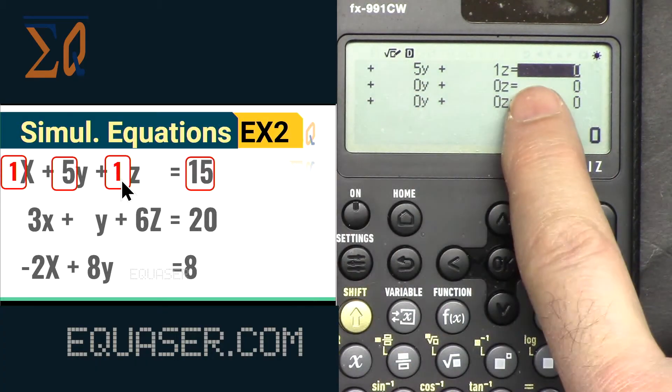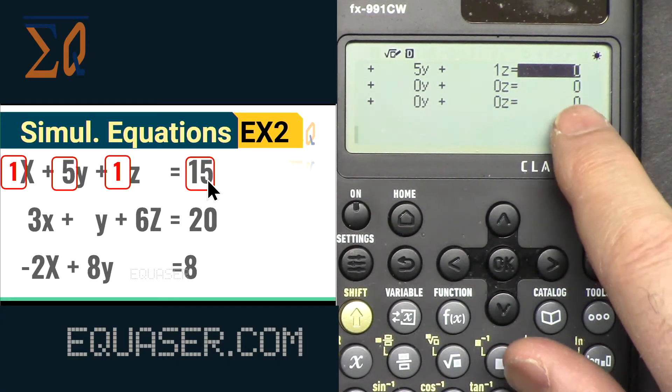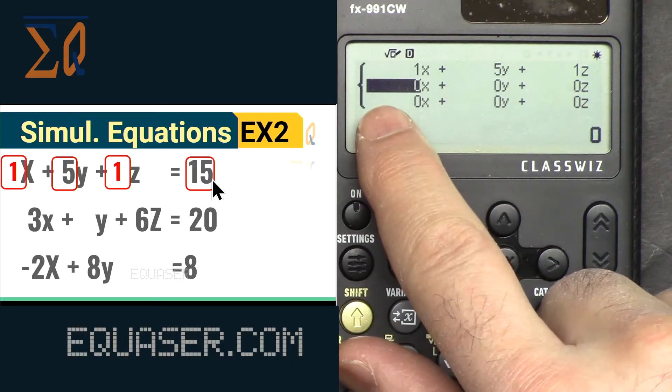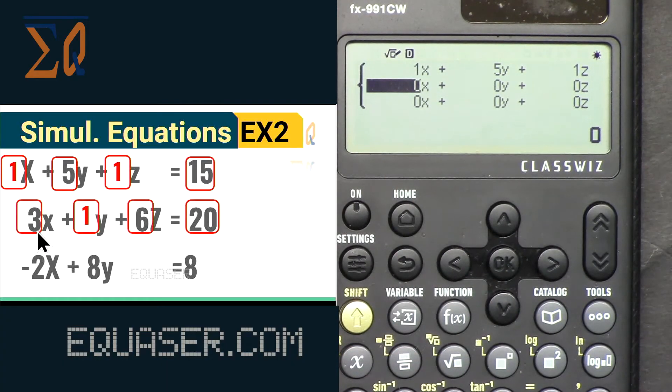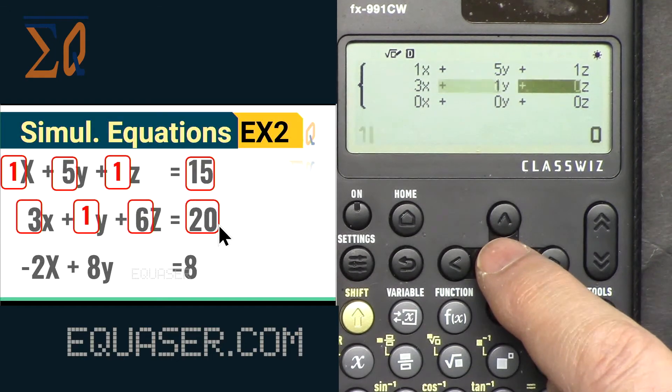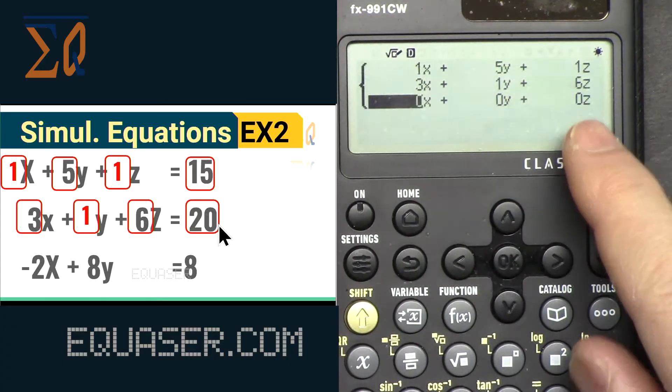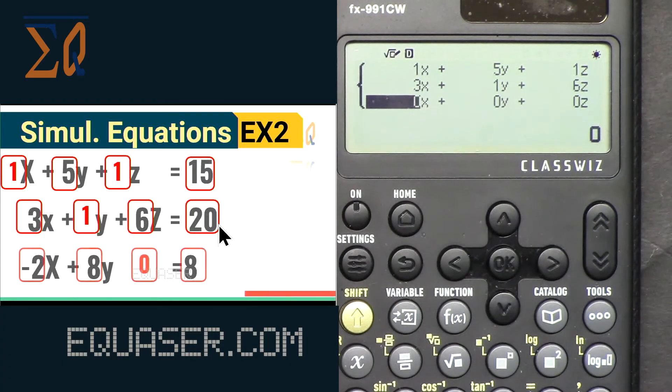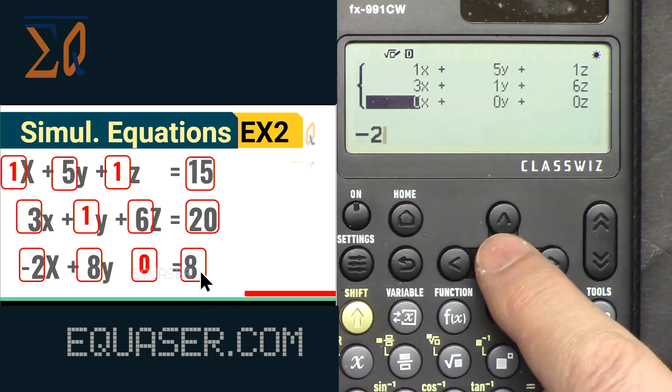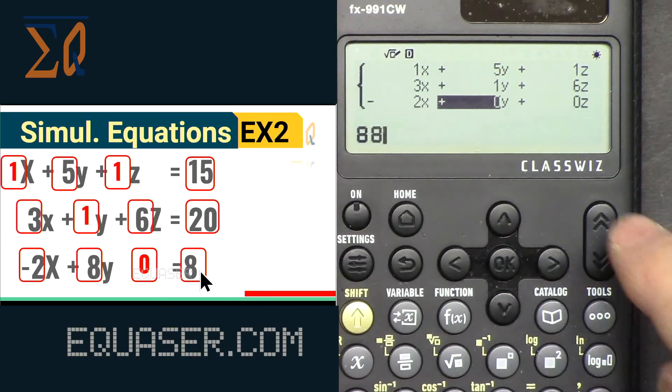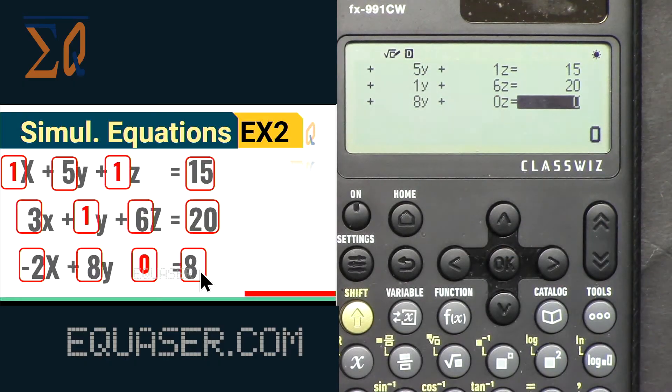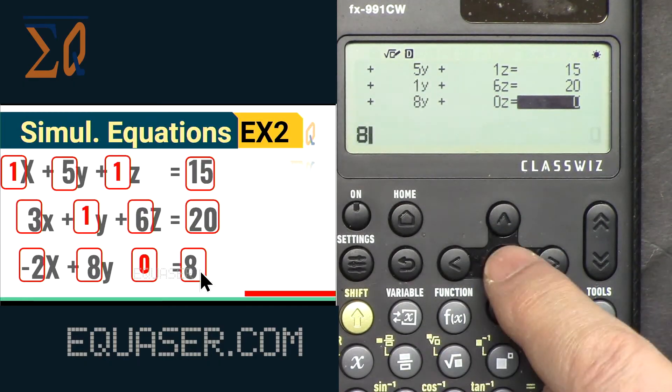Then 5, okay, and then for z, 1. Now pay attention: if I press okay, it goes to the right, and after equal, on the right side of the equation, we have space now to enter 15, then okay. It returns back to the first one. Now we enter 3, 1, 6, 20. So 3, okay, 1, okay, 6, and then 20. I entered it, it moves back. Now here we have to enter 0, -2, 8. Sorry, -2, okay, 8, 0, and then move to the right of the equation, then 8.